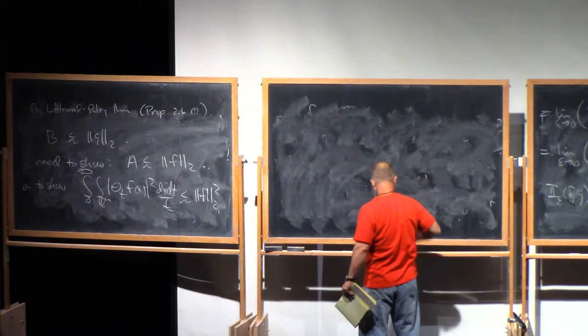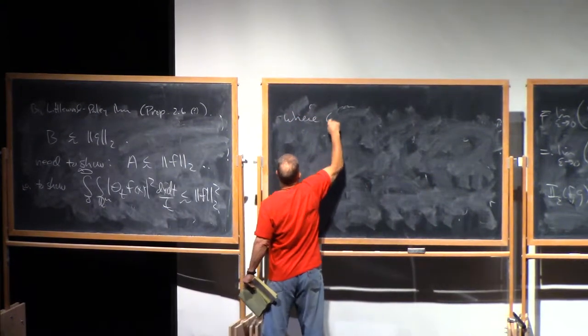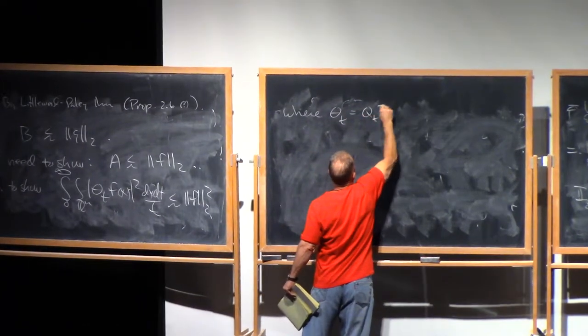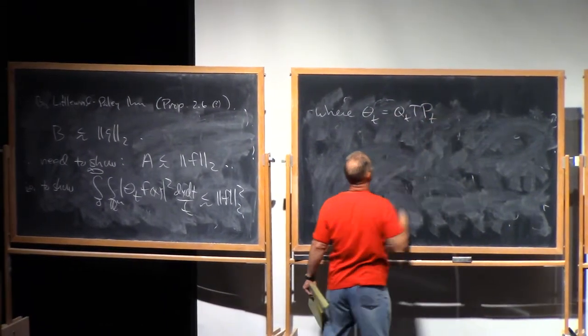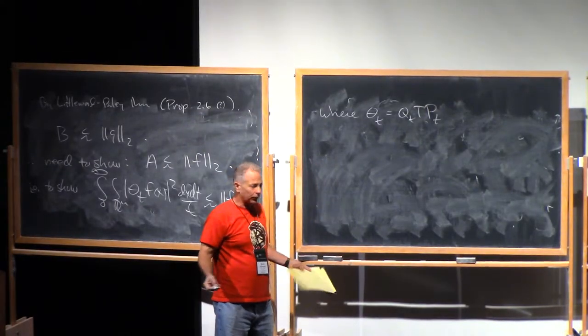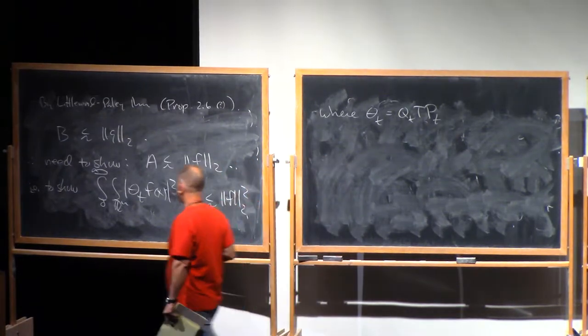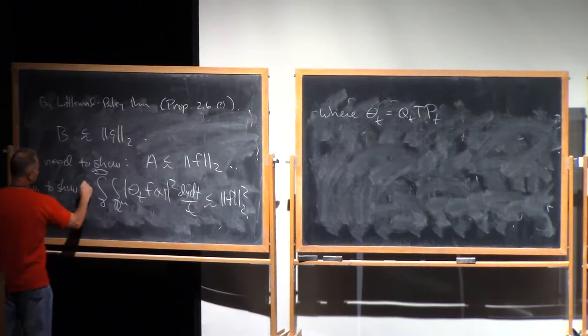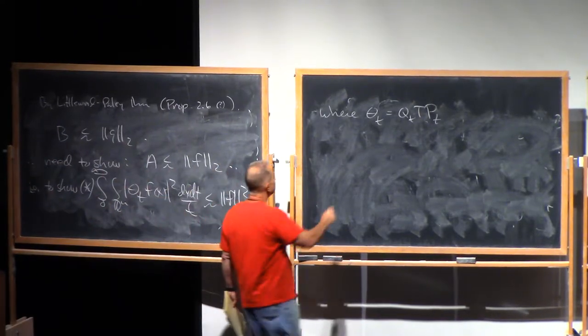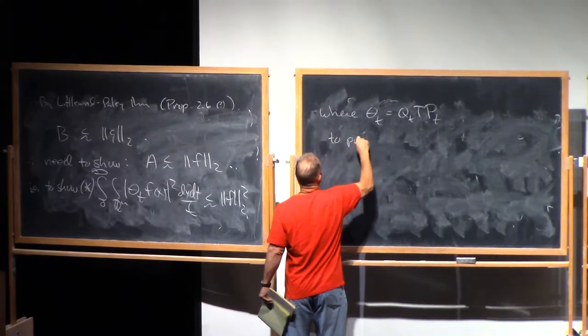So, at this point, you can probably guess where this is going. We're going to prove this by using the T of one theorem for square functions. Maybe I should give this a name. Let me call this thing star.